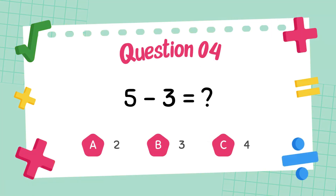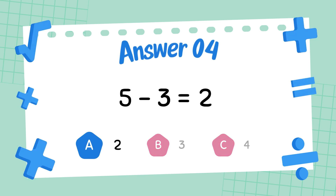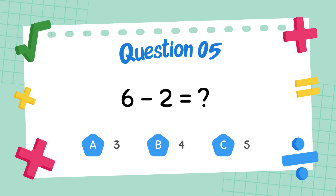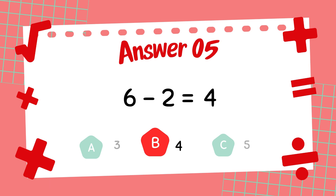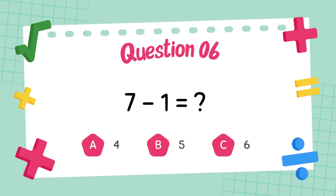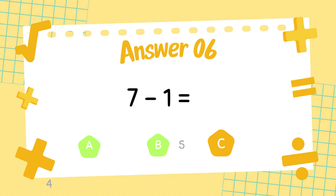What is 5 minus 3? The answer is 2. What is 6 minus 2? The answer is 4. What is 7 minus 1? The answer is 6.